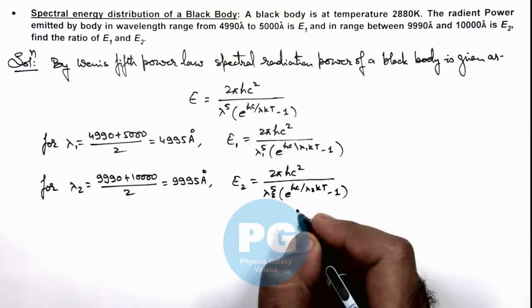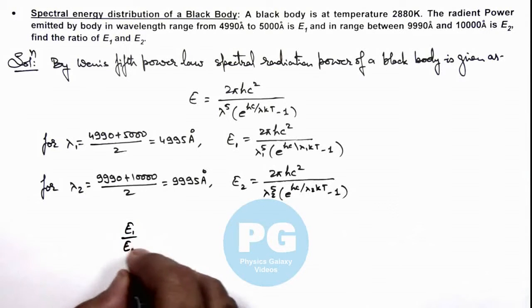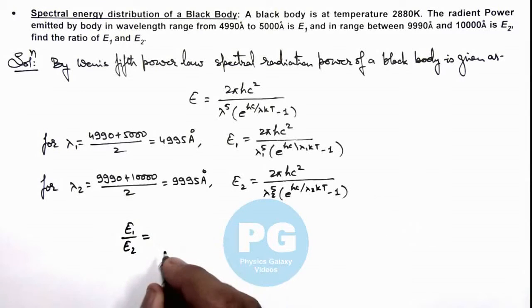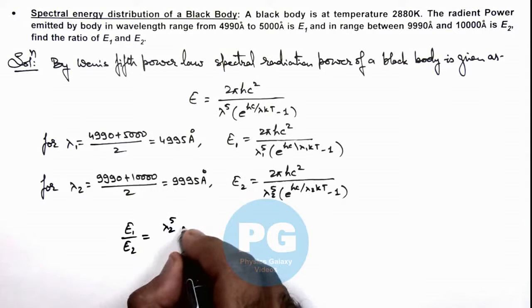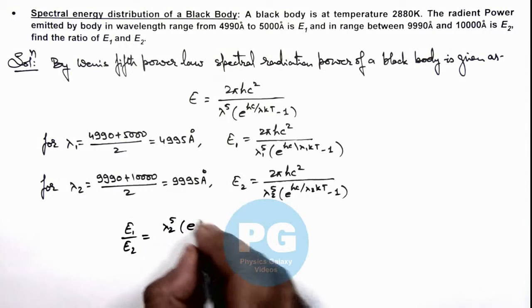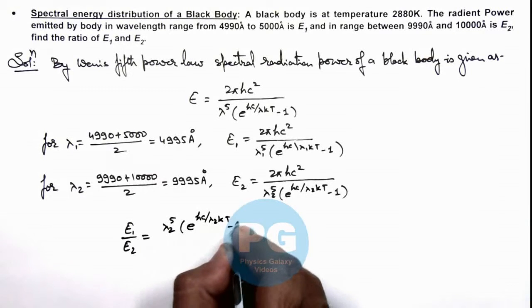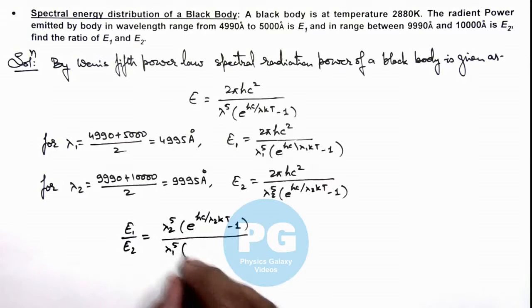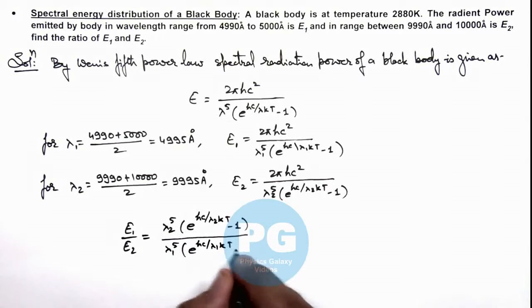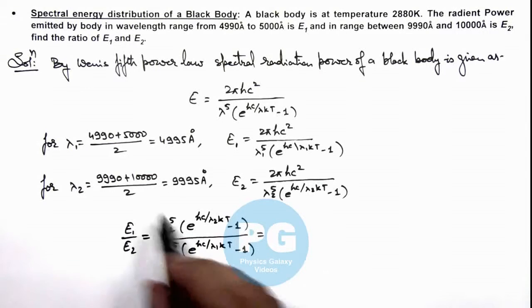Now in this situation if we calculate the ratio of E1 by E2, then it gives us λ2 to the power 5 multiplied by e to the power hc over λ2kT minus 1, divided by λ1 to the power 5 multiplied by e to the power hc by λ1kT minus 1. If we substitute the numerical values of λ1 and λ2 here...